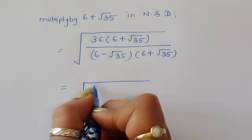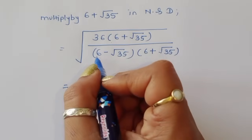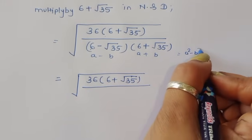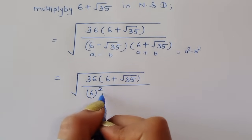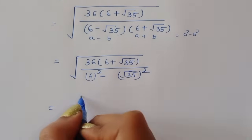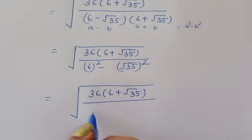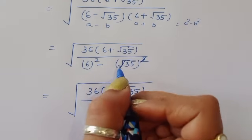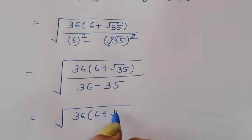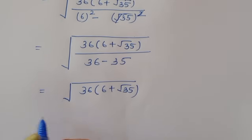This is of the form (a minus b)(a plus b), which equals a squared minus b squared. So a squared is 6 squared, which is 36, and b squared is square root of 35 squared, which is 35. So the denominator becomes 36 minus 35, which equals 1. We get square root of 36 times (6 plus square root of 35).